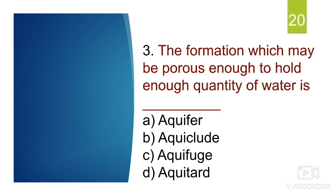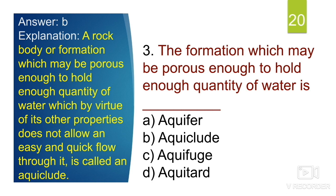The third question is: the formation which may be porous enough to hold enough quantity of water — is it aquifer, aquiclude, aquifuge, or aquitard? The correct option is aquiclude. To understand this, we need to understand the basic differences. Permeable rock formations which store groundwater and transmit sufficient amount of water to a pumping well are known as aquifers.